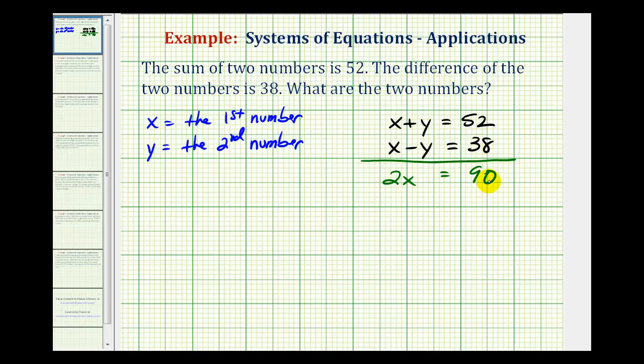So now we have an equation with one variable, so we can solve for x by dividing both sides by two. So we know x must equal forty-five, where x is the first number.